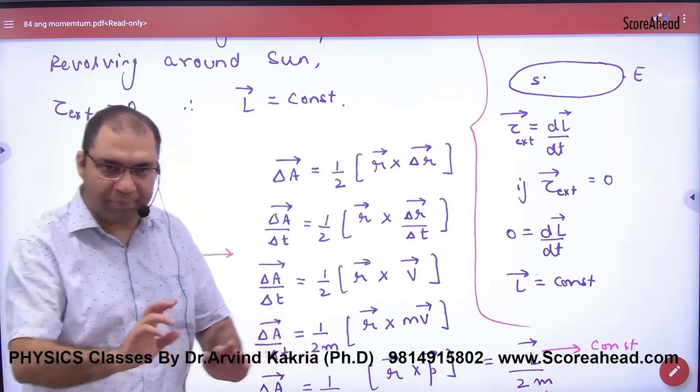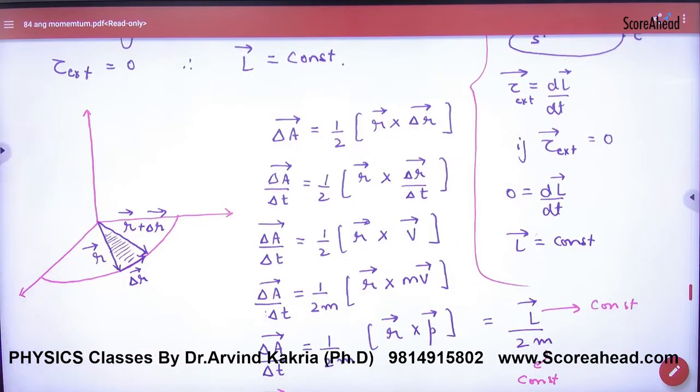Let's prove it. We will work in the proof. Imagine a planet is floating around in a circle or any orbit. Imagine that planet is coming from here, covering a very small displacement delta R, so its position vector is R vector, its new position vector is R plus delta R.